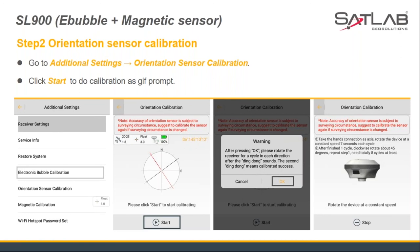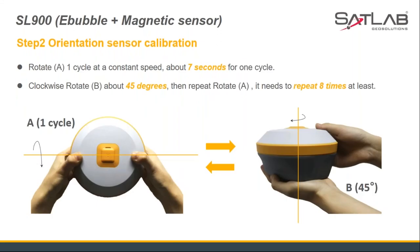The orientation sensor calibration has two parts. First, as shown in picture A, rotate the receiver at a constant speed making one full circle in about seven seconds. Second, as shown in picture B, rotate the receiver 45 degrees clockwise, then repeat the rotation from picture A again — a total of about eight repetitions are needed to ensure each direction is calibrated.